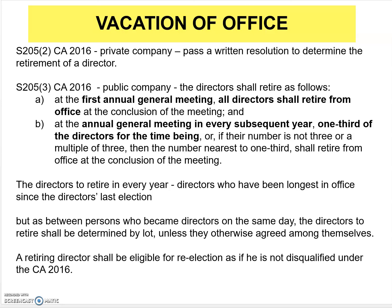Under section 205, subsection 2, the directors to retire every year are those who have been the longest in office since their last election. As between persons who became directors on the same day, the director to retire shall be determined by lot, unless they have otherwise agreed among themselves who will retire first. A retiring director shall be eligible for re-election, provided they are not disqualified under the Companies Act 2016.